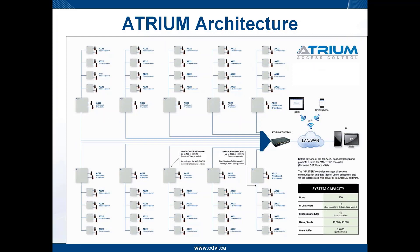The Atrium system architecture for 100 doors: you can have up to 50 control panels connected directly to the network. Each Atrium A22 control panel can accommodate two readers or two doors, so 50 A22s on the network gives 100 doors. Each of these 50 A22 control panels can connect four additional A22s set as door expanders.